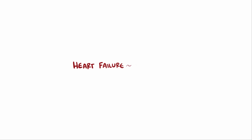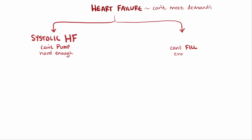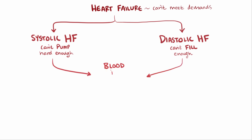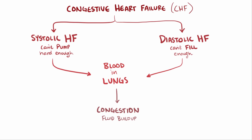Heart failure describes a point at which the heart can't supply enough blood to meet the body's demands, and this can happen in two ways: either the heart's ventricles can't pump hard enough during systole, called systolic heart failure, or not enough blood fills into the ventricles during diastole, called diastolic heart failure. In both cases, blood backs up into the lungs, causing congestion or fluid buildup, which is why it's also often known as congestive heart failure, or just CHF.